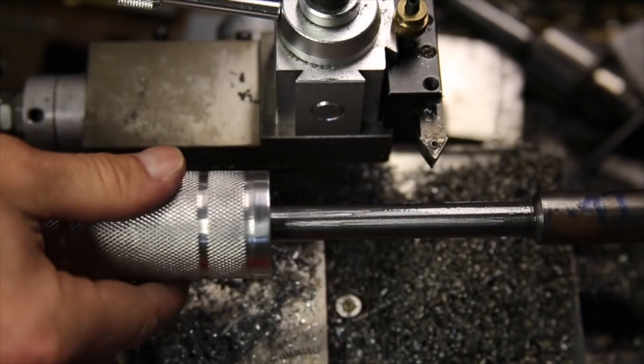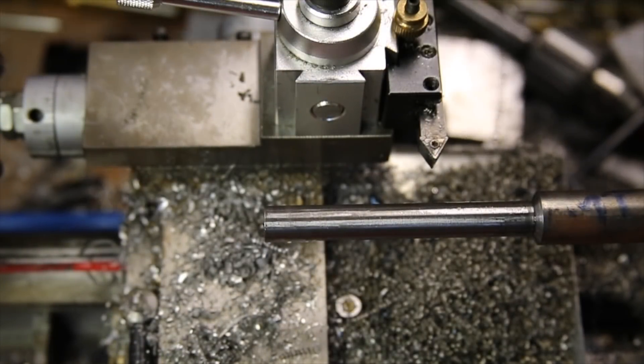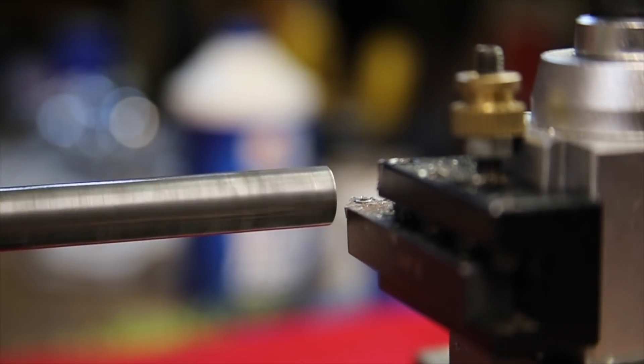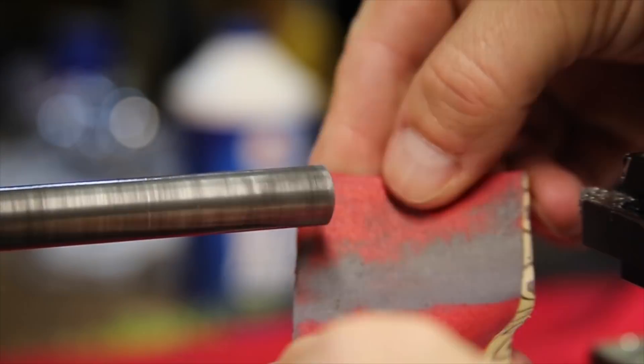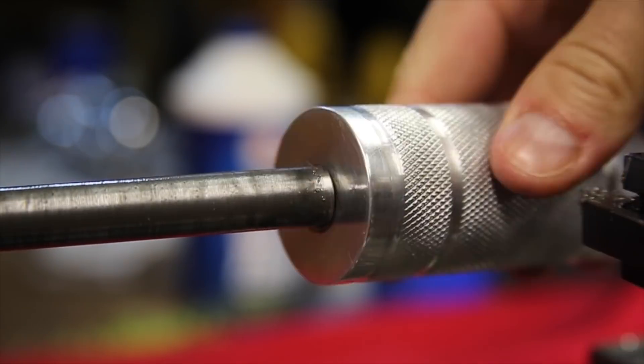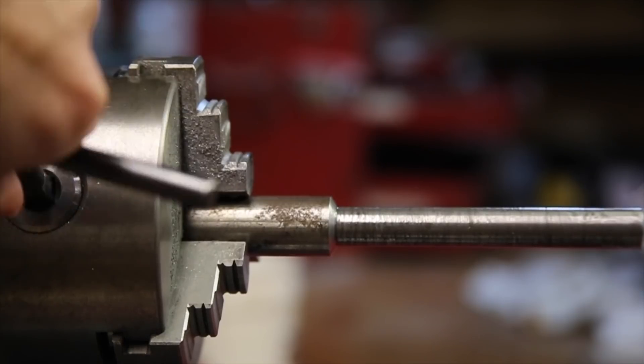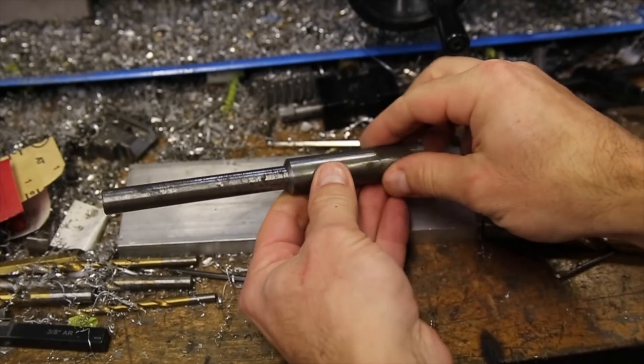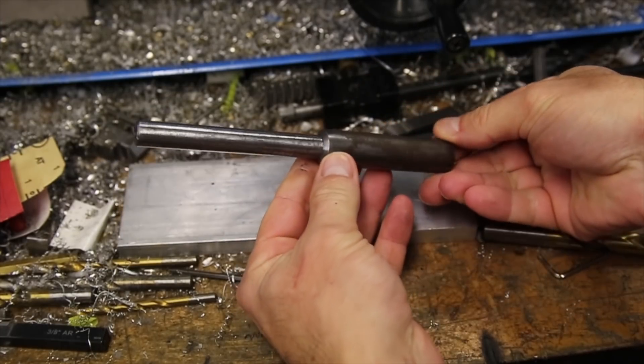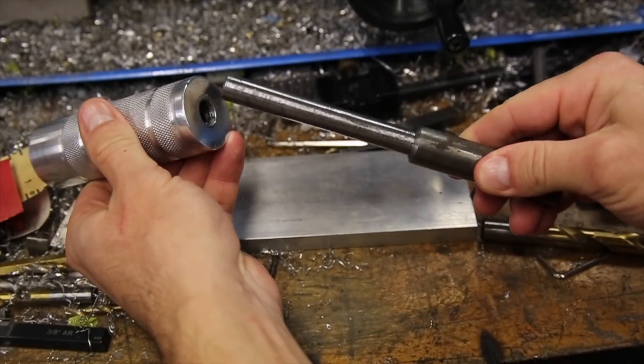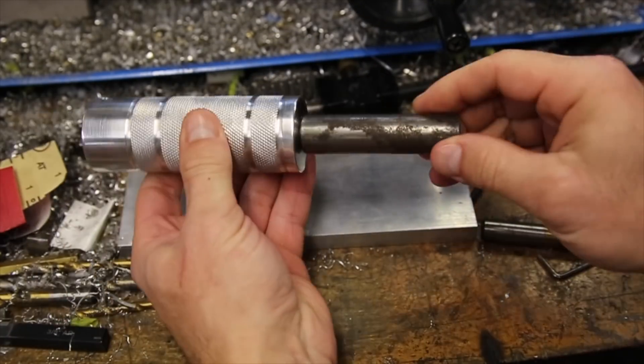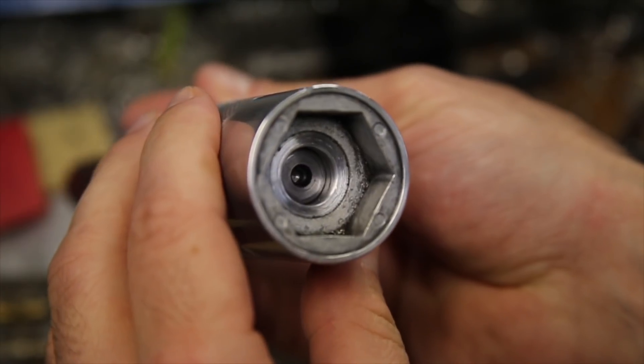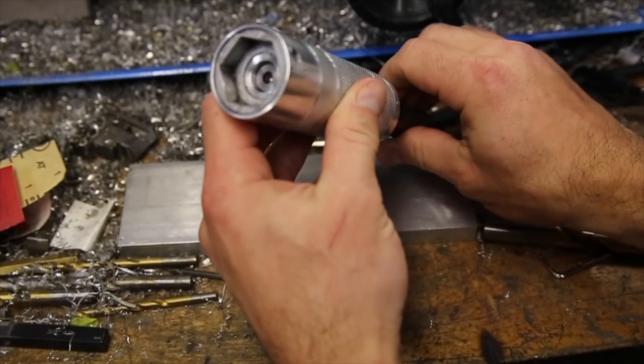To finish off the guide side of the part and make it easier to slide the handle on I just quickly beveled the edge. The guide side is now finished and is nicely just a little shorter than the guide hole in the handle.